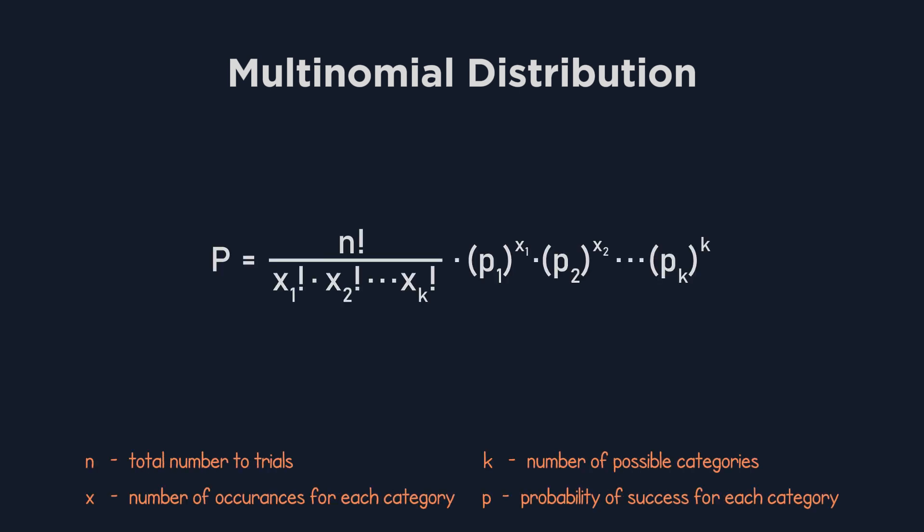First, the left side of the equation involves a fraction that calculates the number of ways we can assign the different outcomes. It's like a combination, but now we're accounting for multiple categories, not just two. On the right side, we see the product of the probabilities of each outcome, with each probability raised to the power of the number of occurrences for that specific outcome. This part tells us the likelihood of seeing exactly that many outcomes for each category.